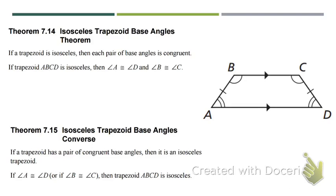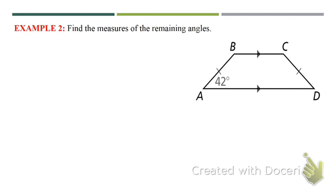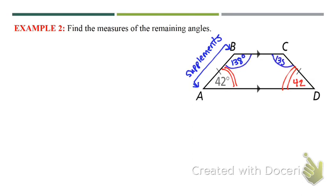Isosceles trapezoid base angles are congruent. If a trapezoid is isosceles, then each pair of base angles are congruent. In this picture, angles A and D are congruent, and angles B and C are congruent. The isosceles trapezoid base angle converse says if a trapezoid has two pairs of congruent base angles, then it is isosceles. We can see it is isosceles: angle D is 42°, and since the bases are parallel, the angles are supplementary, so the other angles are 138°.